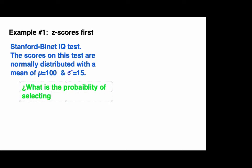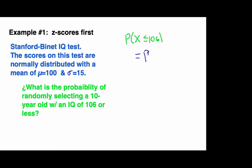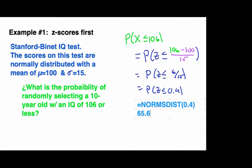Assuming we are working within this distribution, what is the probability of randomly selecting a 10-year-old with an IQ of 106 or less? What we are asking is P of X less than or equal to 106. We will take advantage of the fact that we can convert this value to a z-score. This results in the probability of finding a z-score less than or equal to 106 minus 100, all divided by 15. This is 6 over 15, or 2 fifths, or 0.4. To get this from Excel, we only need to enter norm s dist 0.4, and we get the value 65.5%.